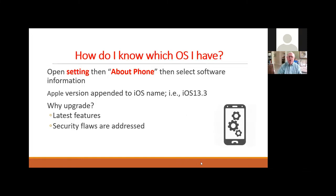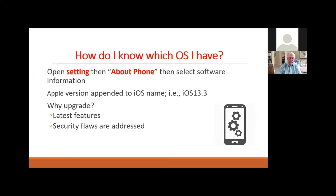How do you know which OS you have? Go into Settings, then About Phone, then select Software Information — the version will be displayed there. For example, version 13.3 for Apple. Why would you upgrade? Two main reasons: it has the latest features you can use on your phone, and it tries to fix security flaws. Most of the time they eventually all get fixed.